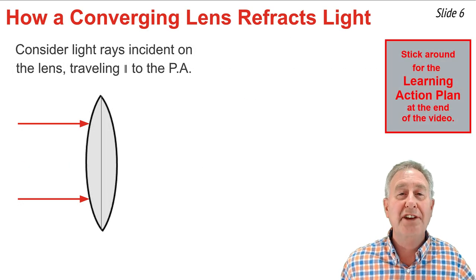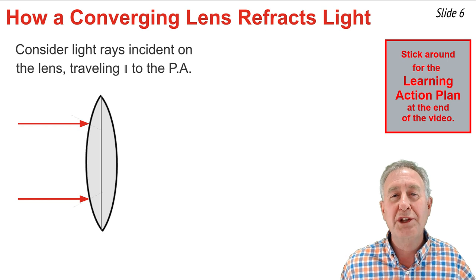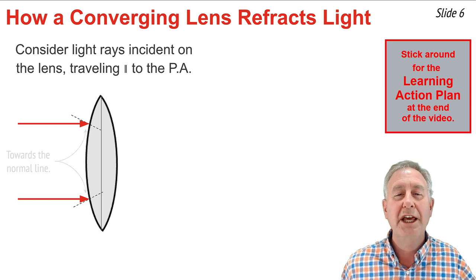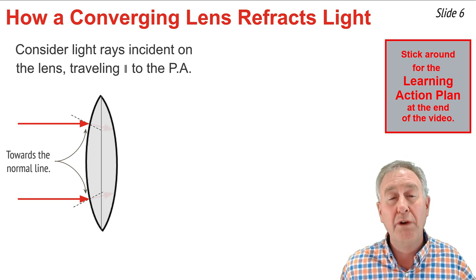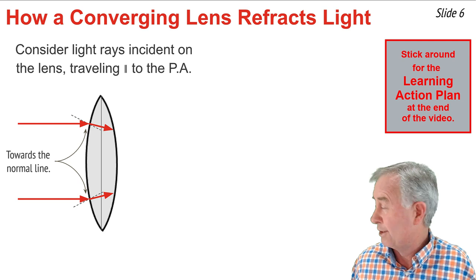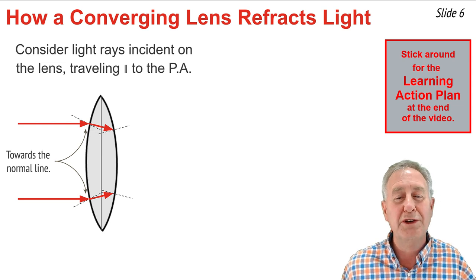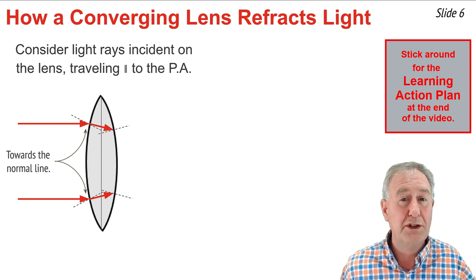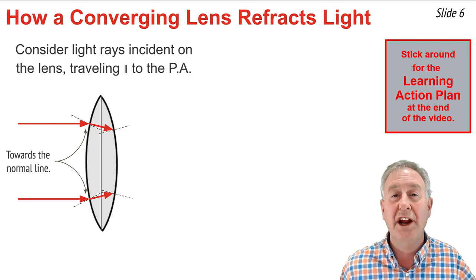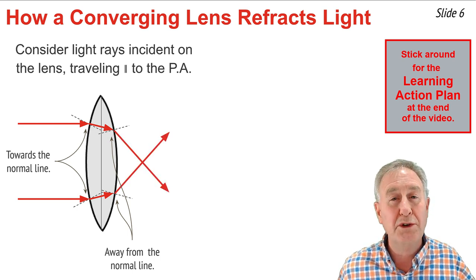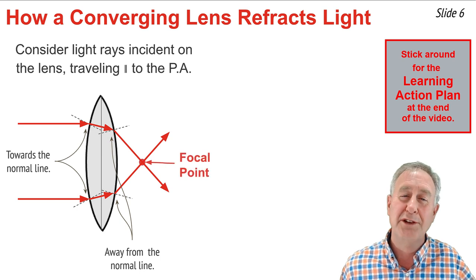Let's consider a converging glass lens with incident rays traveling parallel to the principal axis approaching that lens. On reaching the lens, the normal line can be drawn perpendicular to the surface. Because the light is traveling from the less dense air to the more dense glass, it will bend towards the normal line and refract through the lens, reaching the opposite surface. At the opposite surface, the normal line can again be sketched perpendicular to the surface. Here, the light is traveling from the more dense glass to the less dense air and will refract away from the normal line. The result is that the two refracted rays emerge from the lens and come together at the focal point.